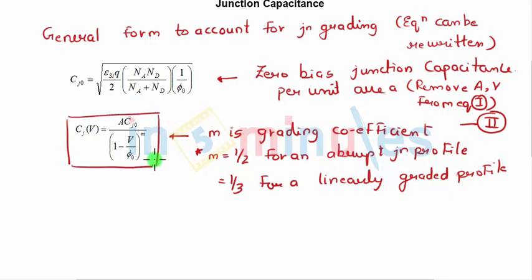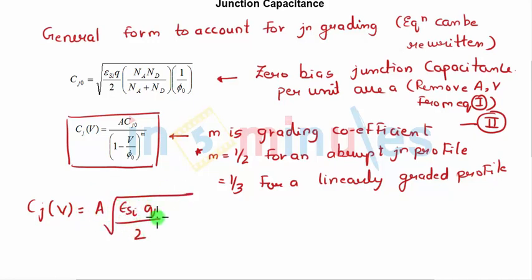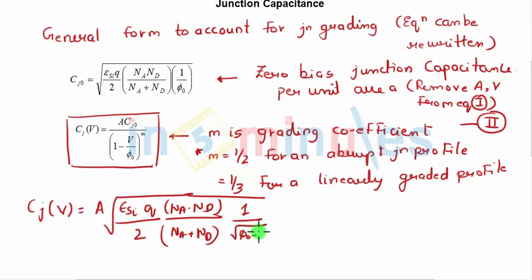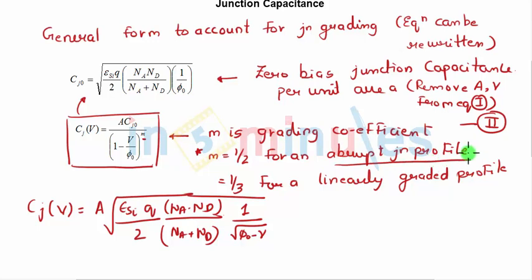This is written in a more general format as CJ(V) = A × CJ0 / (φ0 − V)^M, where CJ0 is the zero-bias junction capacitance per unit area, M is the grading coefficient. For an abrupt junction profile (uniformly doped), M = 0.5, giving exactly Equation 1. For a linearly graded profile, M = 1/3. This general equation lets us calculate junction capacitance given any junction profile.